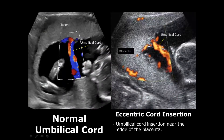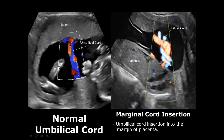Now we move on to umbilical cord insertion. Normally the umbilical cord should enter the placenta at its center. In the case of eccentric cord insertion, the cord enters near the placental edge instead of the center. In marginal cord insertion, the umbilical cord enters the placenta at its margin — the placental edge — instead of the center.